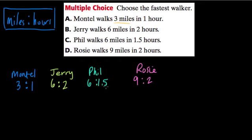The way I know Phil is walking faster is because it says six to 1.5 — it only takes Phil one and a half hours to walk six miles, whereas it takes Jerry two hours to walk the same distance. In other words, it takes Jerry longer to walk the same distance, so he's going slower.